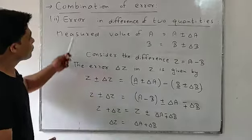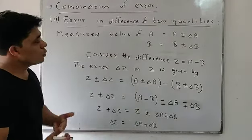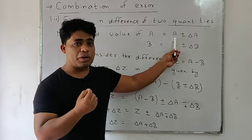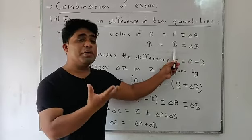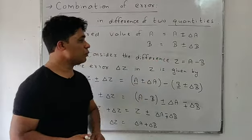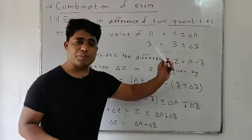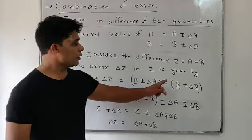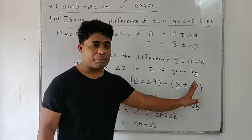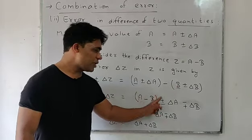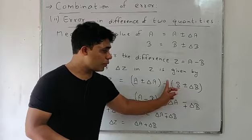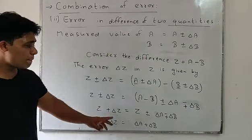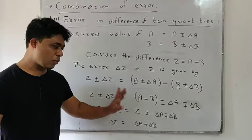Now the second case: error in difference of two quantities. Again, a and b are two physical quantities with measured values a plus-minus delta a and b plus-minus delta b. This time z equals a minus b. We write the physical quantities with their errors: z plus-minus delta z equals (a plus-minus delta a) minus (b plus-minus delta b). The minus sign outside changes the sign, giving minus-plus delta b.